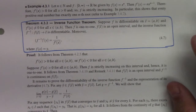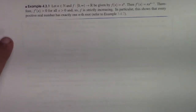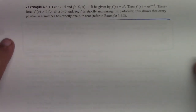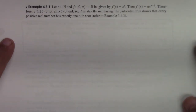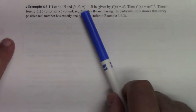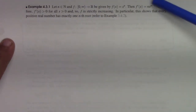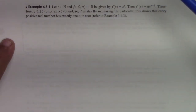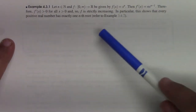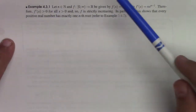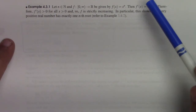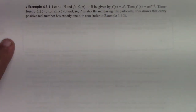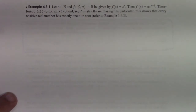One simple application of that proposition is the power function f(x) = xⁿ. The derivative is n·xⁿ⁻¹. For positive x in (0, ∞), f′(x) > 0, so f is strictly increasing on (0, ∞). In particular, as the textbook notes, this shows that every positive real number has exactly one nth root. We'll get back to that at the end of this section.